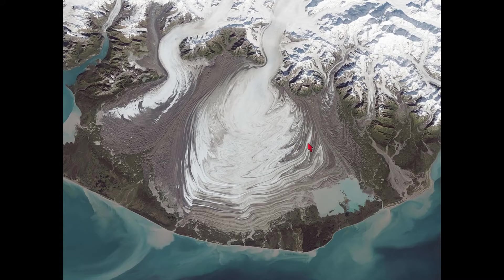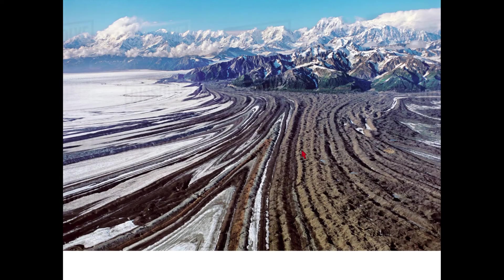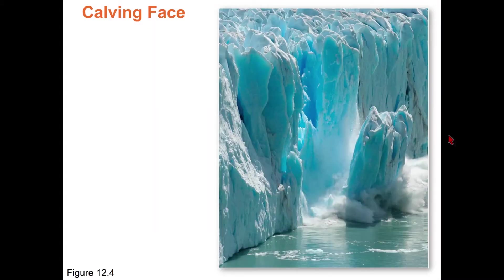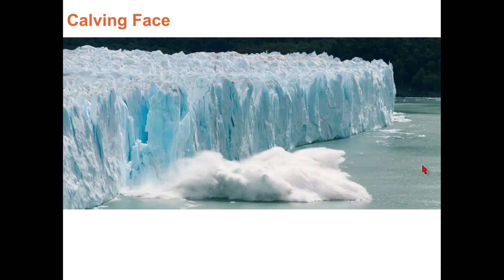Here you can see lateral moraines formed by the glacier pushing up material and then melting back repeatedly. Here's a tidewater glacier with a calving face making bergy bits. Another picture shows a glacier actively calving with huge blocks of ice — this could be a thousand feet high, incredibly large.